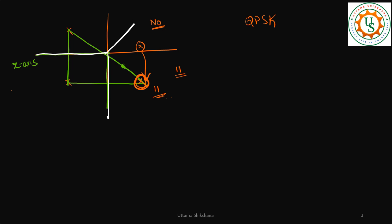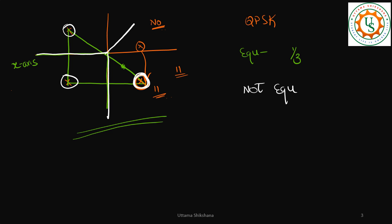There is one more question in the three-point QPSK case. Here I had considered equiprobable — all points with probability 1/3. Another flavor could be non-equiprobable: for example, two points have probability 1/4 each and one point has probability 1/2. How would the decision boundary look in that case? I am leaving this to you to answer — please do comment in the comment section.